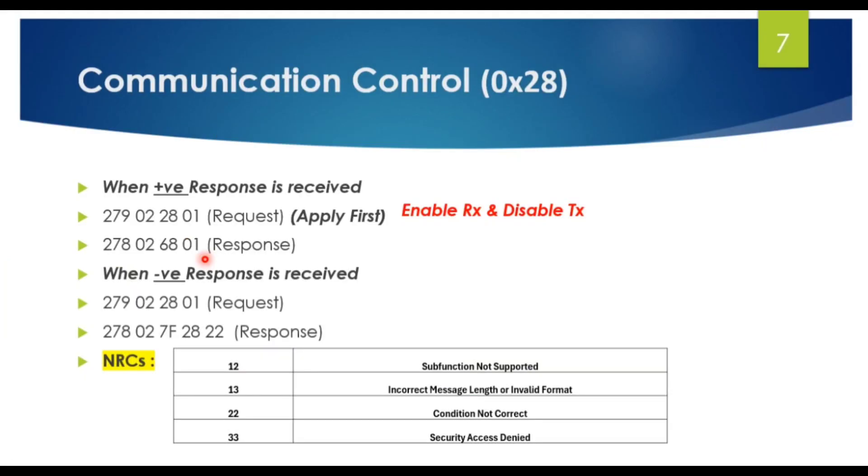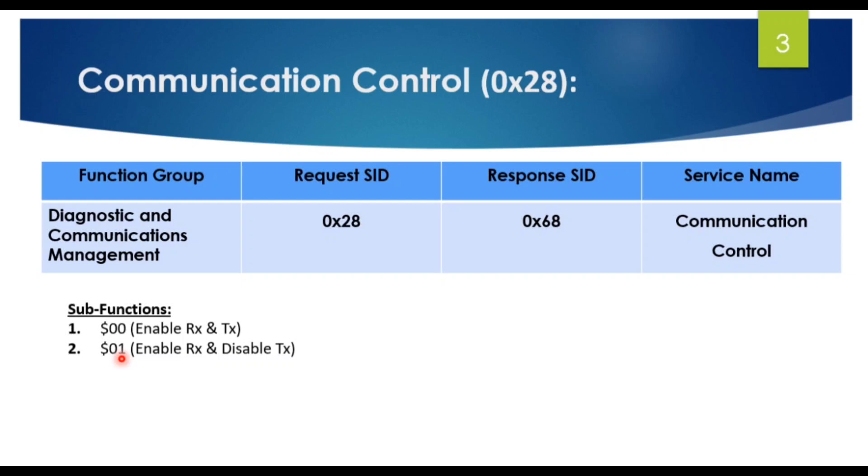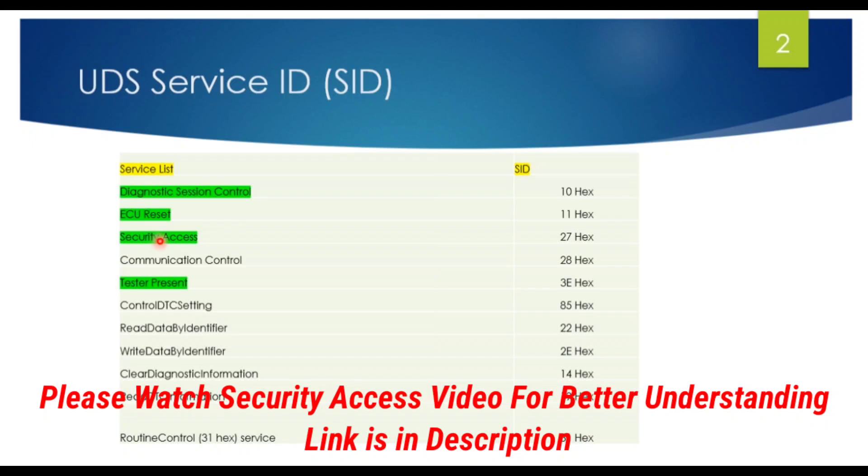So that's how communication control works. You can think of the city as a car, like I have shown you in this example. In communication control, there are two sub-functions: 0x00 and 0x01. Communication control can be sent to all ECUs in one shot. Since communication control is stopping all messages, the ECU needs to be unlocked, so we have to perform security access for this.